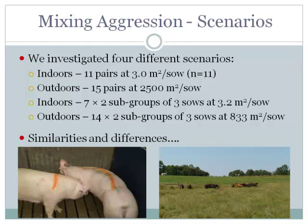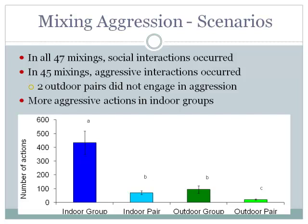In all 47 mixing scenarios we looked at, we got social interaction between unacquainted animals. In 45 of the 47, we got aggressive interactions — two outdoor pairs did not engage in aggression. There are more aggressive actions in indoor groups, but when you compare indoor groups with outdoor groups, you see a lot less aggressive action outdoors compared to indoors, and a difference between pairs as well.